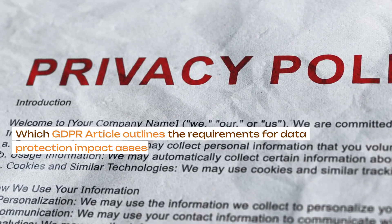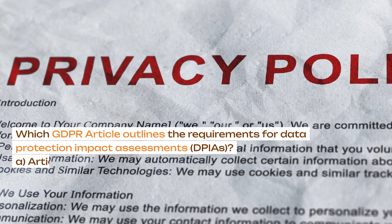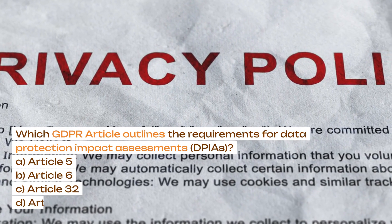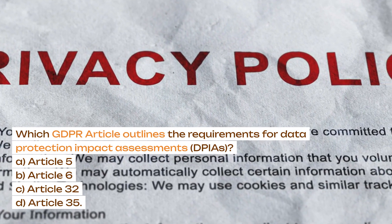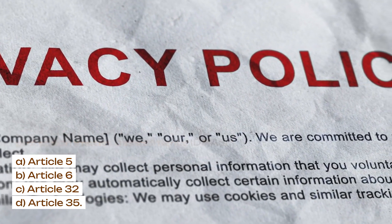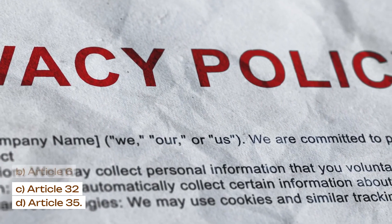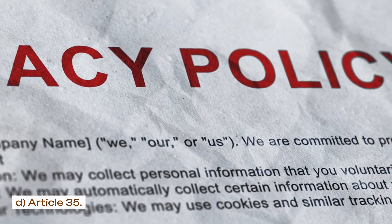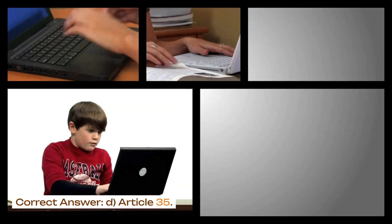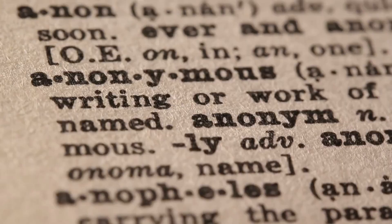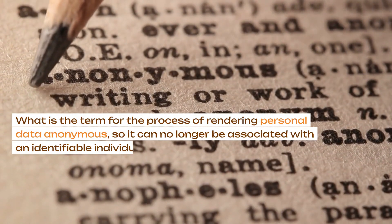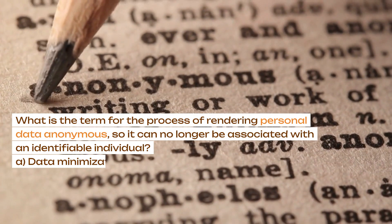Which GDPR article outlines the requirements for Data Protection Impact Assessments (DPIAs)? A. Article 5. B. Article 6. C. Article 32. D. Article 35. Correct answer: D. Article 35.